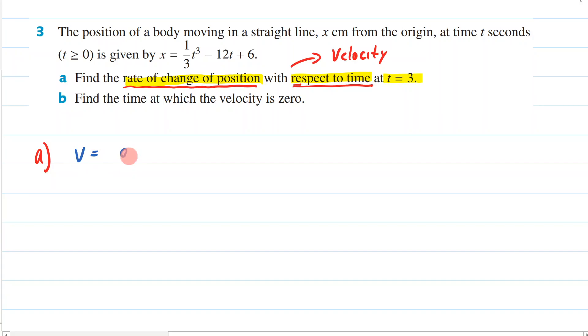V equals dx/dt. Remember, to find instantaneous velocity, you differentiate the position equation here. So this is going to be 3 times one-third is just 1, so t squared minus 12. You obviously don't need that one there.